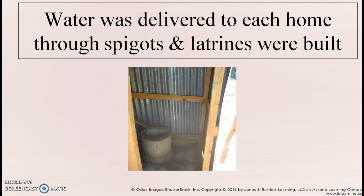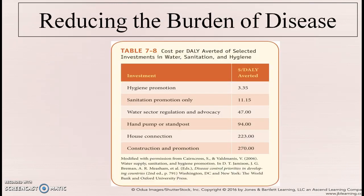The UN forces also brought in a water system to that part of Haiti after the cholera epidemic. This community did get a clean water source and latrines built to help prevent future issues. These improvements in hygiene, sanitation, and water can avert disability and save money. Having a house connection to a clean water spigot allowed people to wash their hands, wash their clothes, and flush the toilet — significantly reducing disease burden.